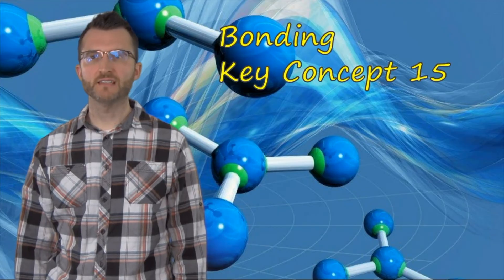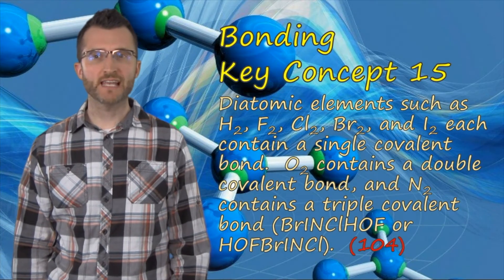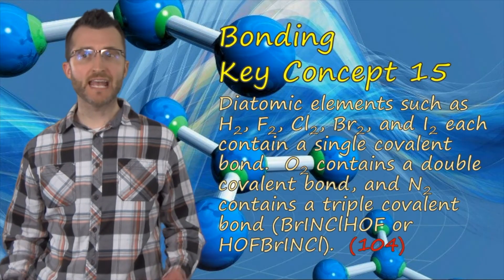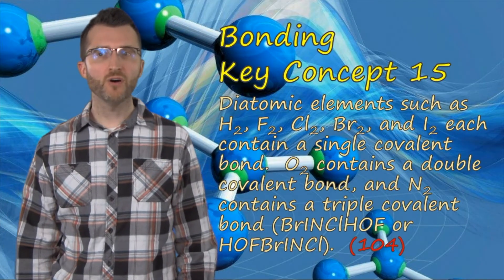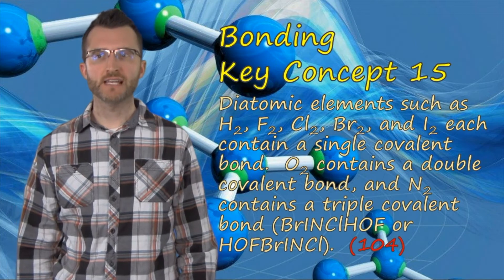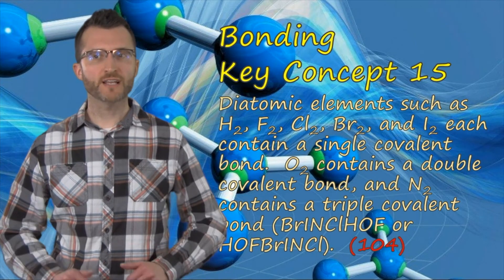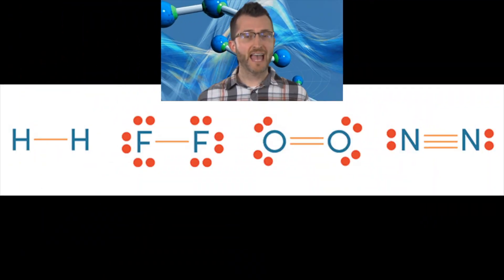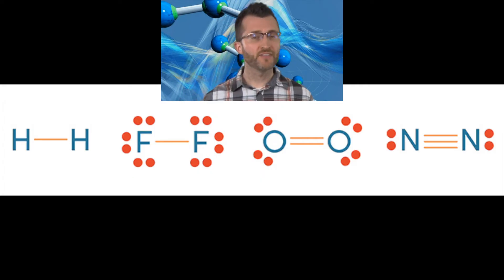Bonding key concept 15. Diatomic elements such as H2, F2, Cl2, Br2, and I2 each contain a single covalent bond. O2 contains a double covalent bond, and N2 contains a triple covalent bond. Don't forget, Brinkel-Hoff, or if you prefer, Hoff-Brinkel. We've already explained why O2 and N2 have a double and triple bond respectively, but it's just a really good thing to remember that all the diatomics have single bonds, whereas O2 has a double bond and N2 has a triple bond.